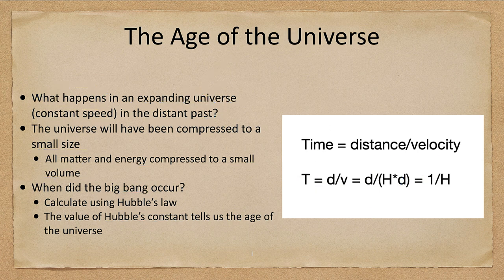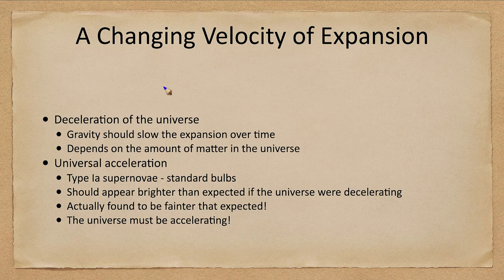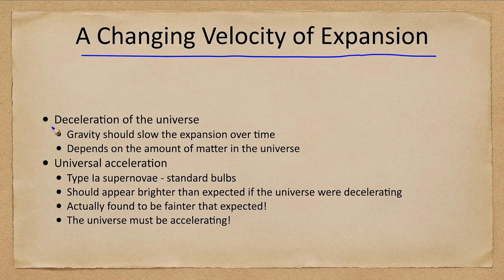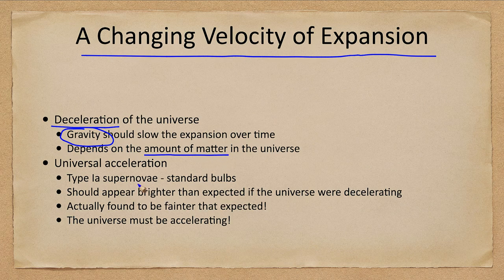Now that again assumes that everything is expanding at a constant speed. What happens if the velocity of expansion is changing? We think the universe should be decelerating. Why? Gravity is going to slow the expansion over time. Every galaxy pulls on every other galaxy that would cause them to slow down. The amount of slowing would depend on how much matter there is in the universe. So we would expect that over time things are moving slower now than they were in the distant past.